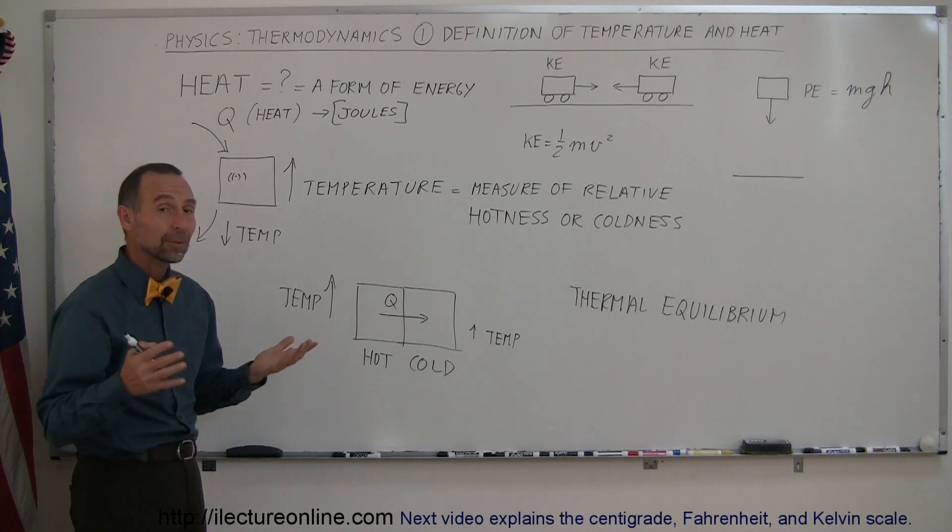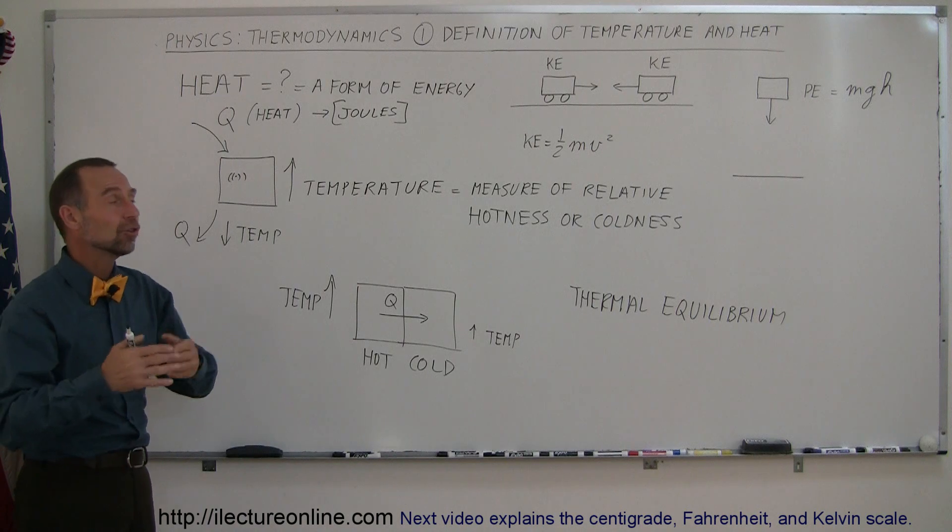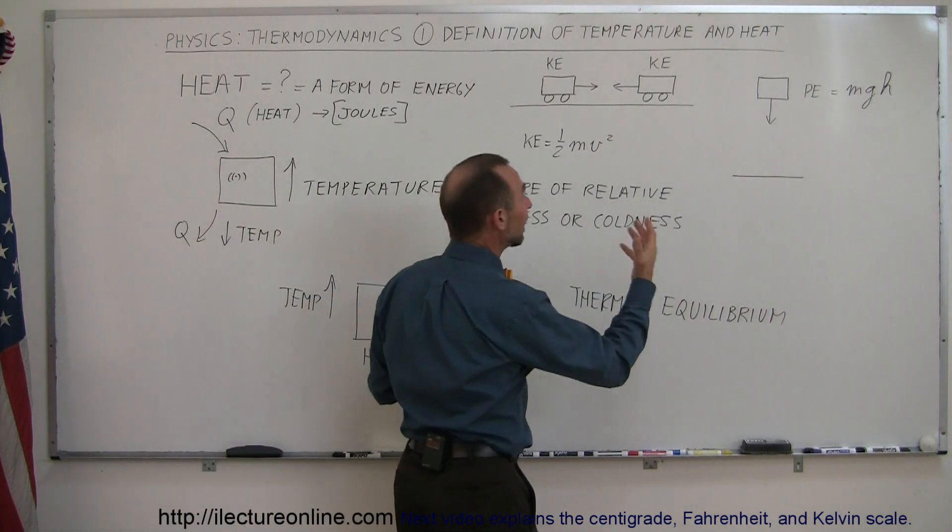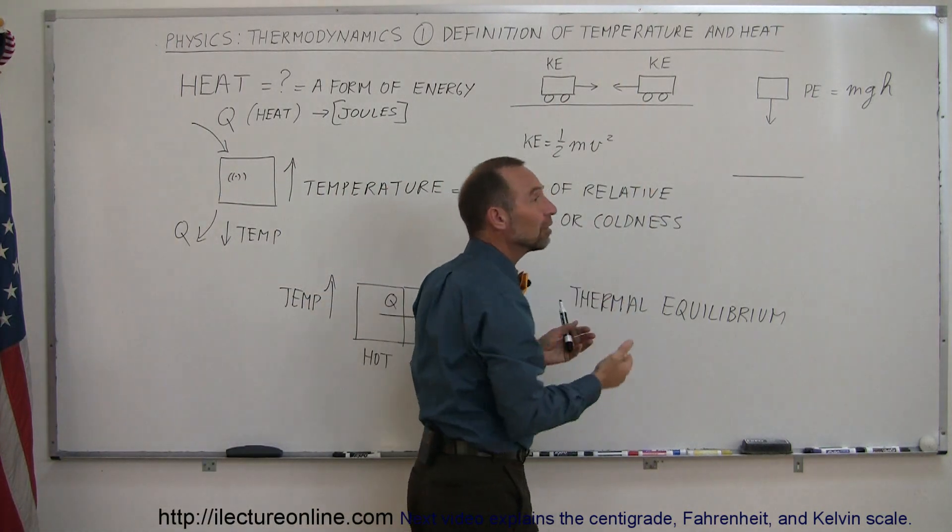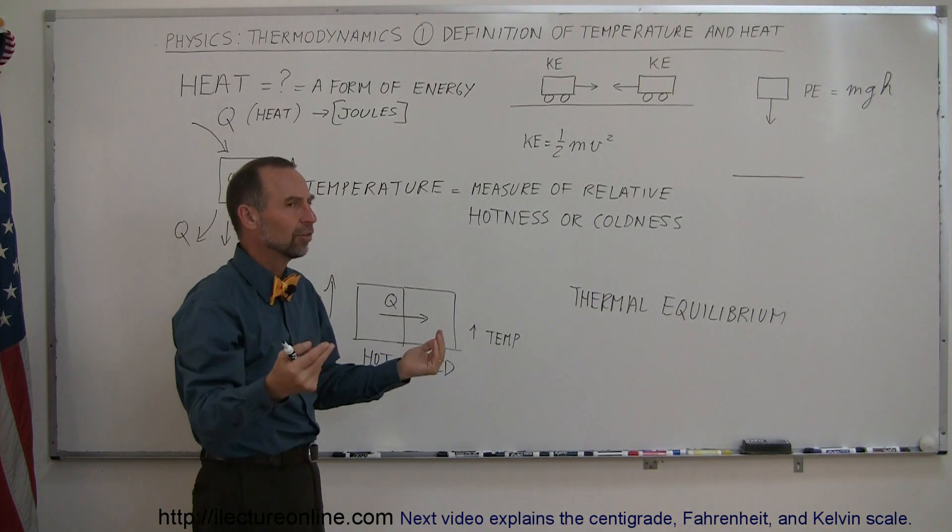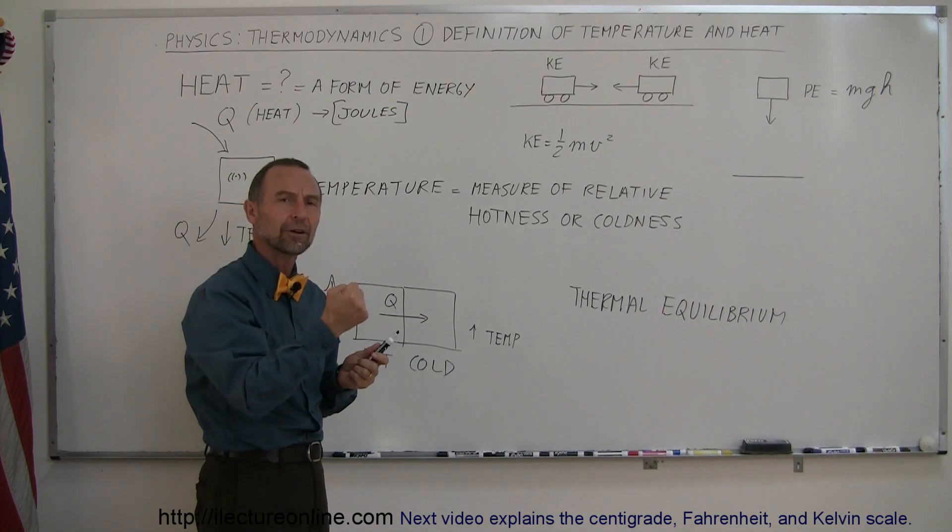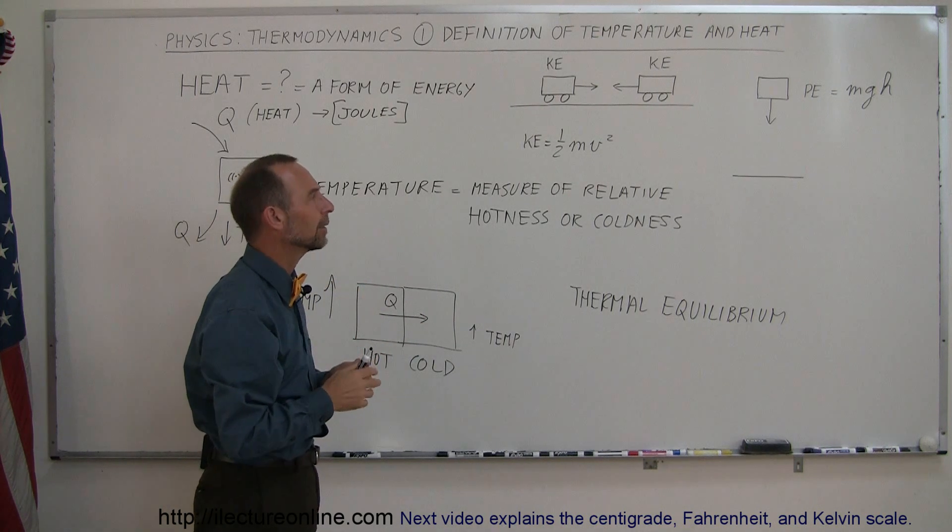Alright, so now I think we have a pretty good understanding of the three things. Heat is a form of energy. Energy, typically it's gained or obtained when mechanical energy is converted into useless energy called heat. Because once it goes into heat, it's hard to get it out. And we have to take it out in a very special way, and we'll talk about that later.